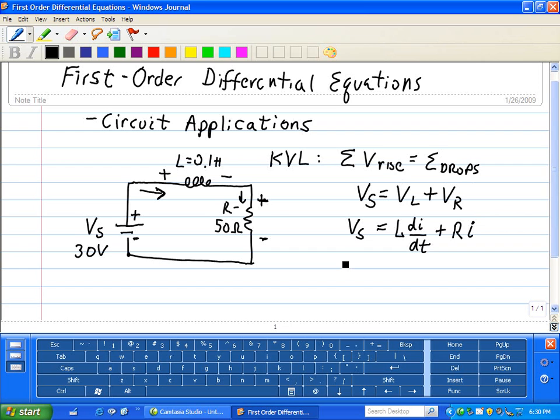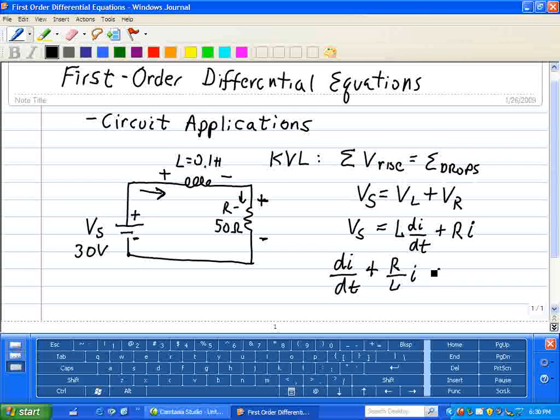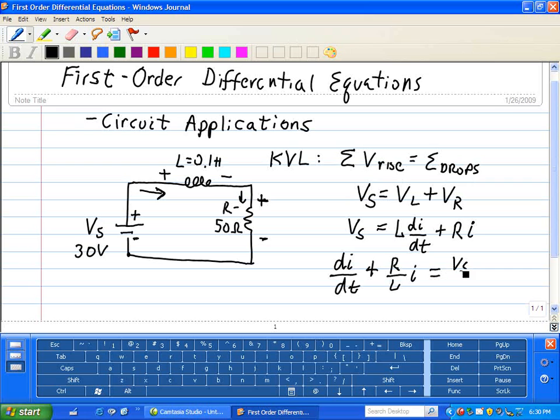We can put it in standard form where we isolate the highest derivative, in this case, derivative of 1 by itself. So we have dI/dt plus R over L times I equals Vs divided by L, where we took this equation, rearranged it, and divided L on both sides.